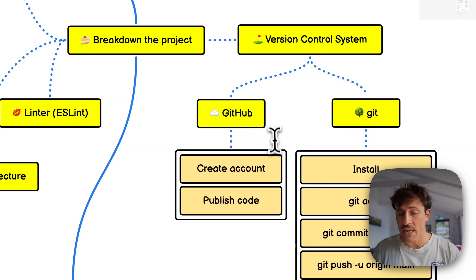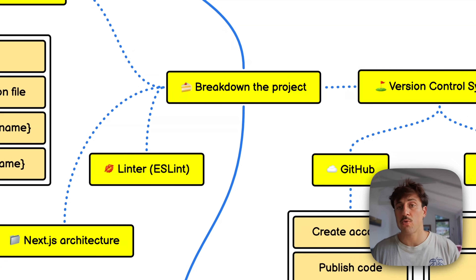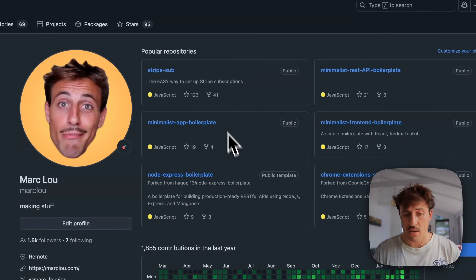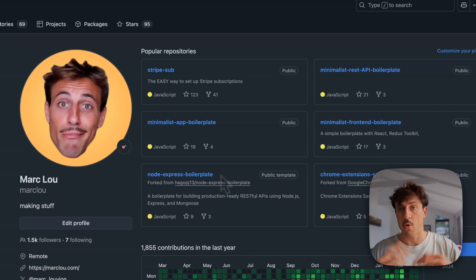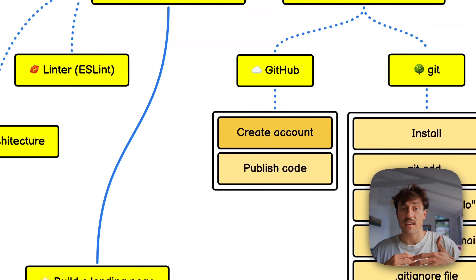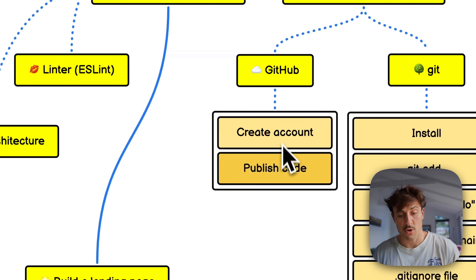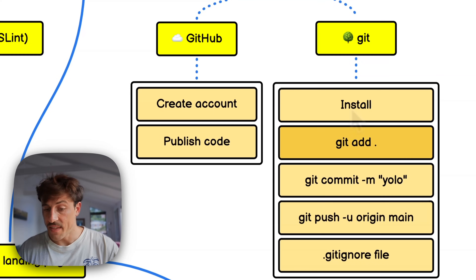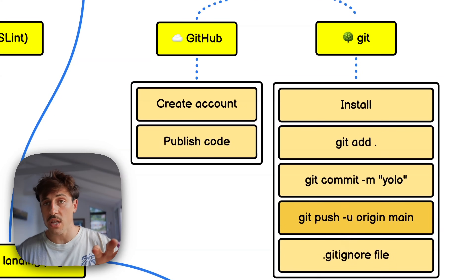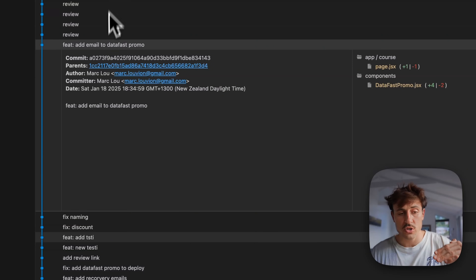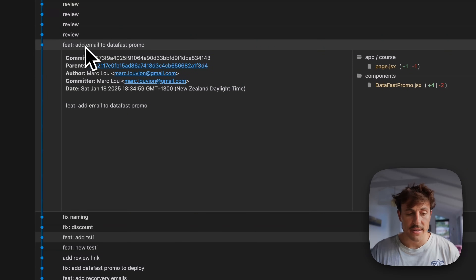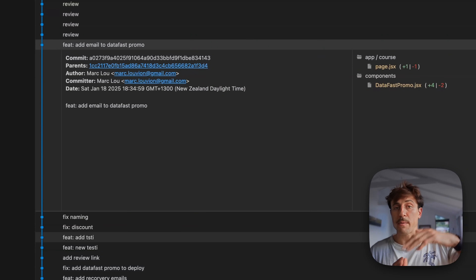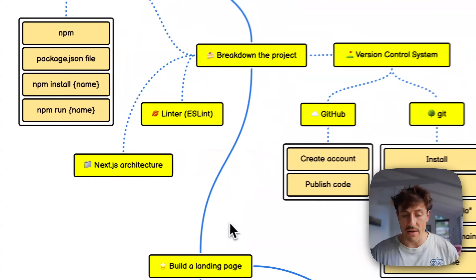Next is version control. GitHub is essentially Google Drive for developers — create an account and start pushing your code there. To upload code you need Git. Learn just the very basics: `git add`, `git commit`, and `git push`. Git helps you make versioned snapshots of your code so whenever you make an update, you write a little message and push it automatically to GitHub.